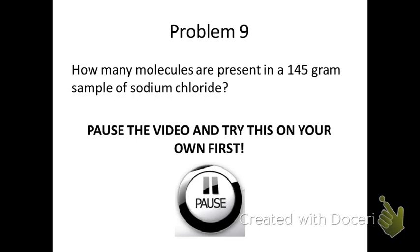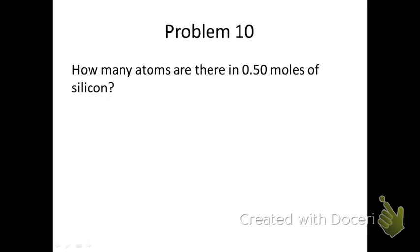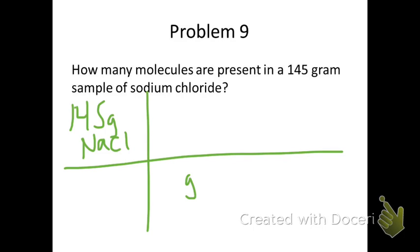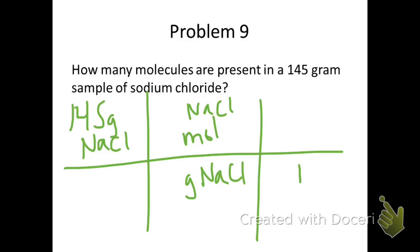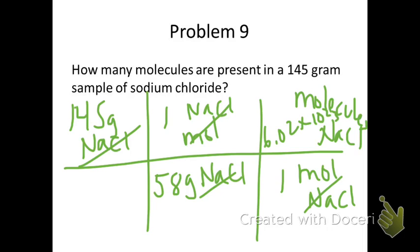Read number 9, pause the video, try this for yourself, and then resume to check. In this problem we have 145 grams of sodium chloride and we are trying to get to molecules. Grams of sodium chloride will be equal to moles of sodium chloride. We need to keep going to get to molecules, so moles of NaCl in the bottom equates to molecules of NaCl on top. One mole of anything is 6.02 times 10 to the 23rd particles. Cross out units, multiply the top, divide by the bottom, and you get 1.5 times 10 to the 24th molecules of NaCl.